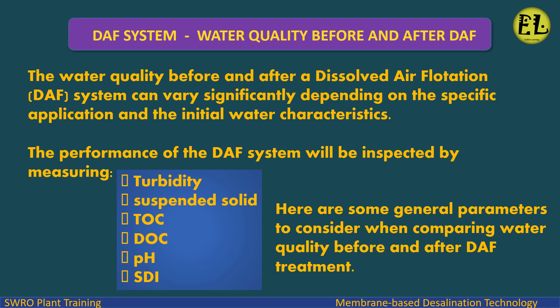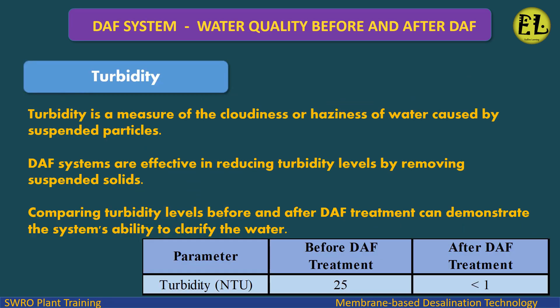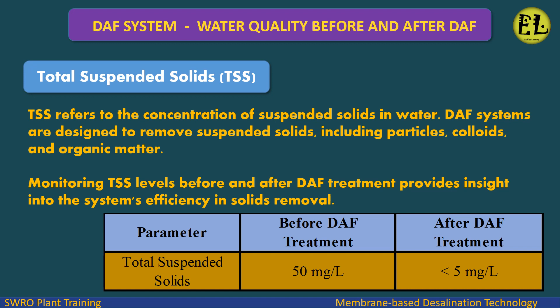Turbidity is a measure of the cloudiness or haziness of water caused by suspended particles. DAF systems are effective in reducing turbidity levels by removing suspended solids. Comparing turbidity levels before and after DAF treatment can demonstrate the system's ability to clarify the water.